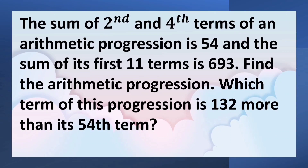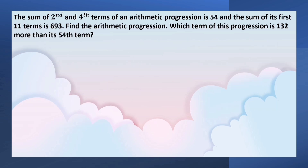The sum of 2nd and 4th terms of an arithmetic progression is 54 and the sum of its first 11 terms is 693. Find the arithmetic progression. Which term of this progression is 132 more than its 54th term? The question has two parts to answer: first, we have to find the arithmetic progression, and also we have to find the term which is 132 more than its 54th term.